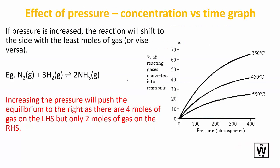Now when we're looking at pressure and equilibrium, what we're looking for is which side has the most moles of gas. So if pressure is increased, the reaction will shift to the side with the least moles of gas or vice versa.